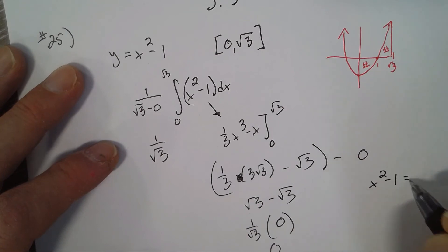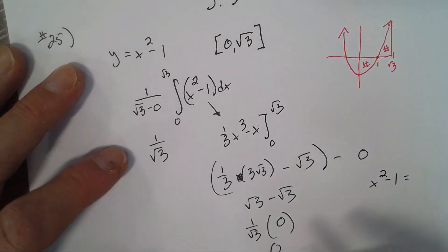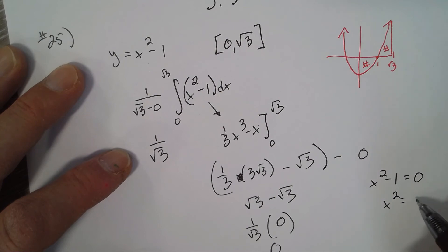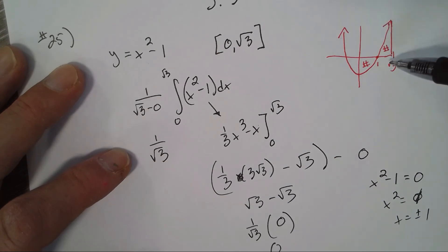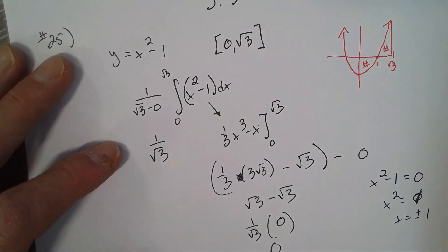So x equals plus or minus 1. So where does the parabola equal 0? Right there at 1 and negative 1. The mean value theorem for integrals guarantees that on the interval from a to b...